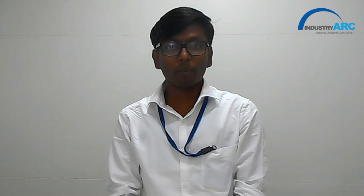Starting with the introduction of Atomic Layer Deposition. It is a nanotechnology-based deposition process employed for coating very thin films on any shape and geometry. The two distinct characteristics include high conformal coating and self-limiting atomic layer-by-layer growth. The ALD process takes place in four steps. The first step is precursor dosing, which involves adsorption of precursor molecules at the reactive sites of the surface, followed by the formation of reaction products. The next step is purging, where excess precursor and reaction products are purged out of the deposition chamber, leaving behind only the adsorbed precursor monolayer.